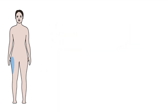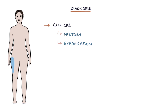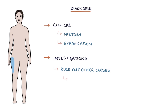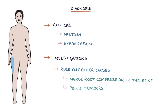The diagnosis of Meralgia Paraesthetica is mainly clinical, based on the history and examination findings. Other investigations may be used to rule out other causes, for example nerve root compression in the spine or pelvic tumours that may be compressing the nerve.